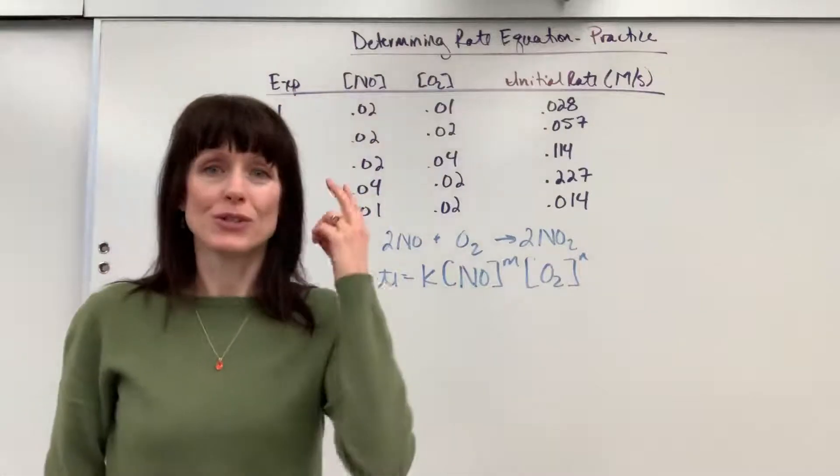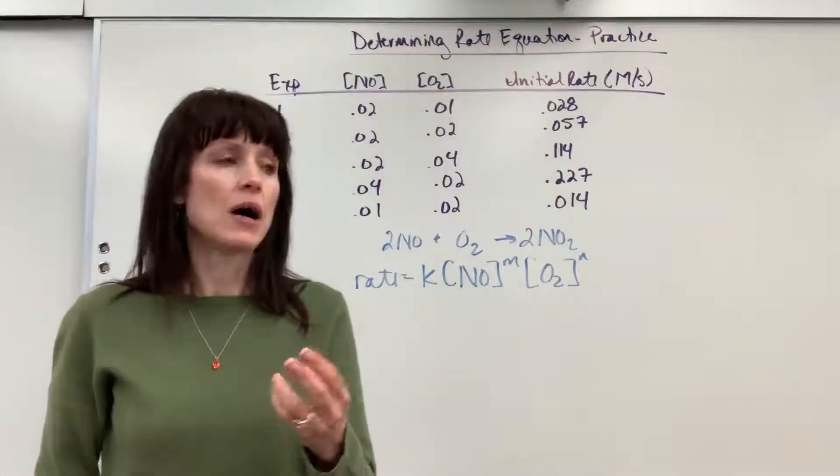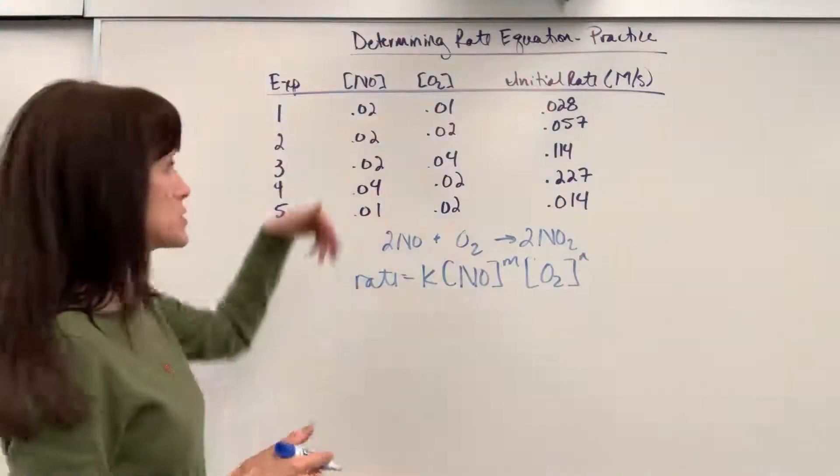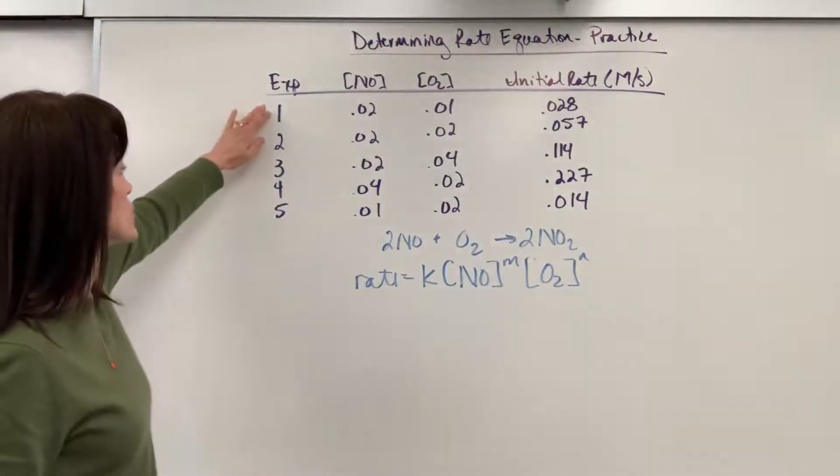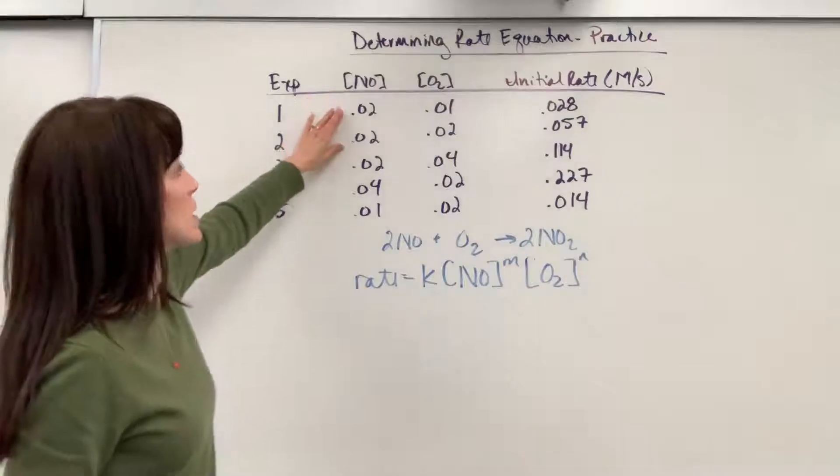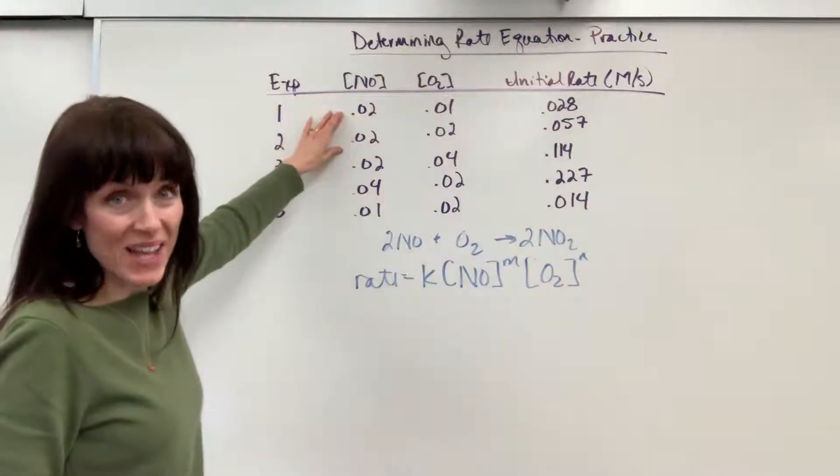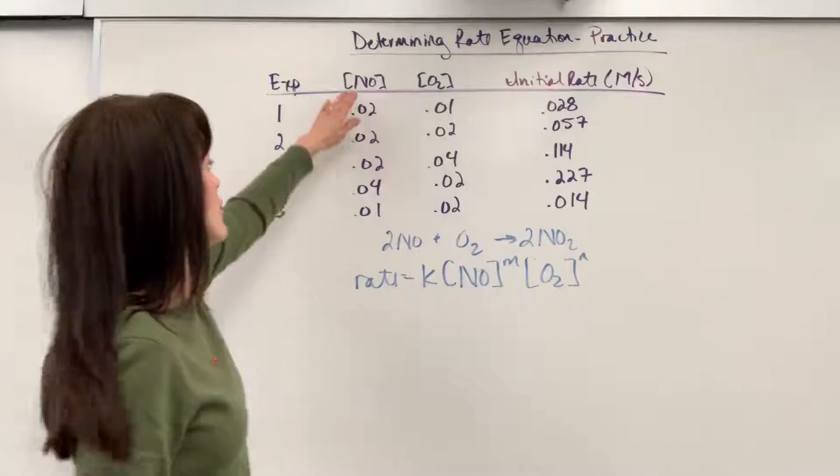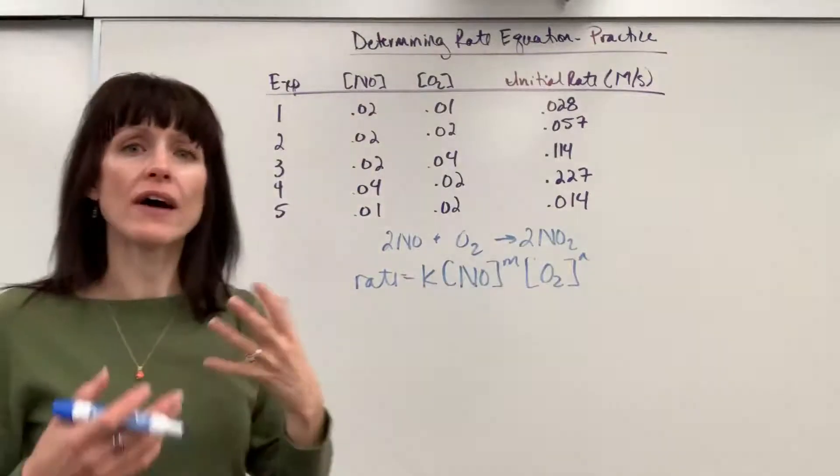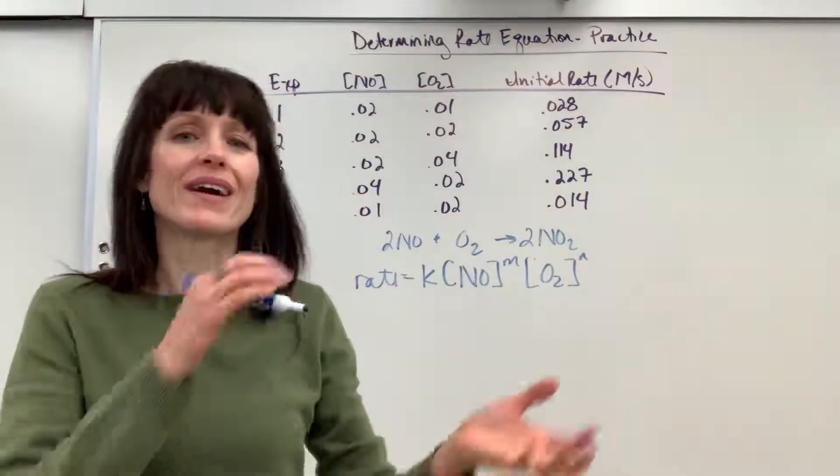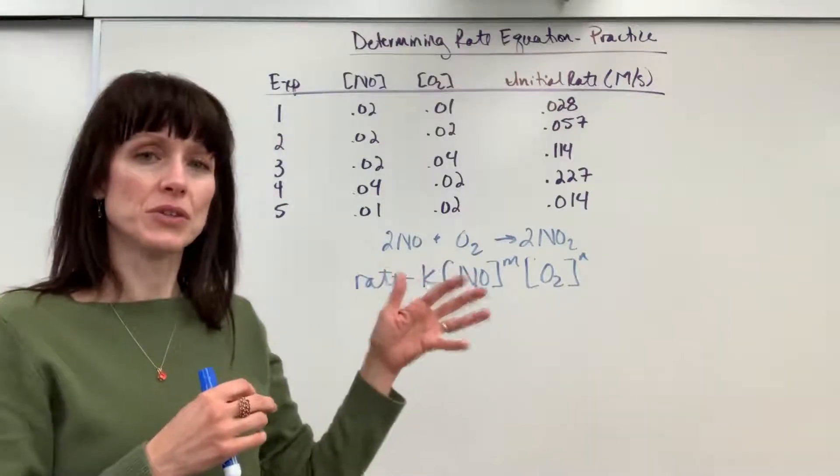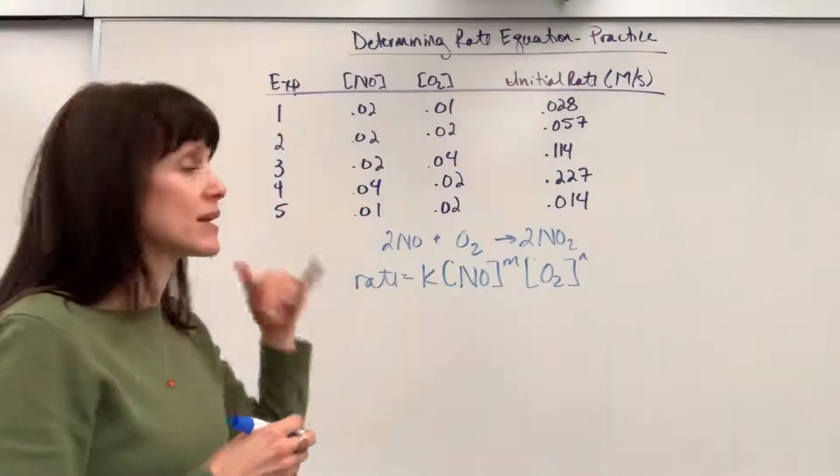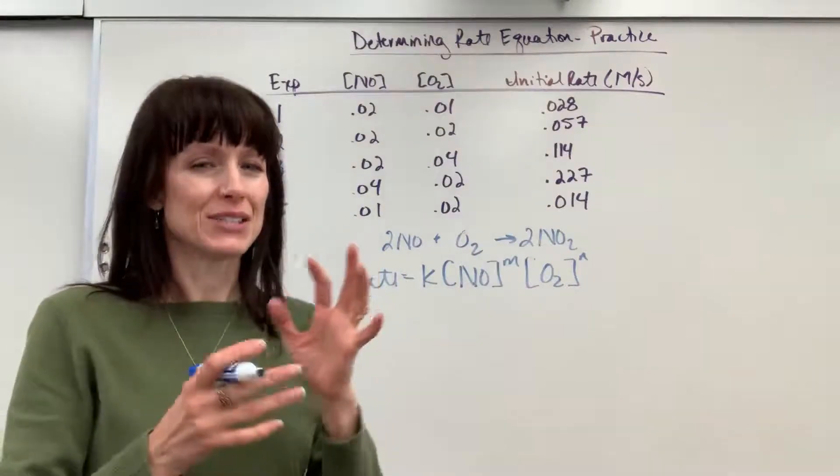So I'm going to pick two of my trials. I always want one of my concentrations to cancel out. Let's look. Oh, I see one. Here's trials 1 and 2. Notice the concentrations of NO are the same. So when I divide these, those will cancel out. Now after I pick my trials where I may have one concentration cancel out, I always put the largest numbers in the numerator and the smallest numbers in the denominator because I don't want a fraction. I don't like dealing with fractions and exponents at the same time.